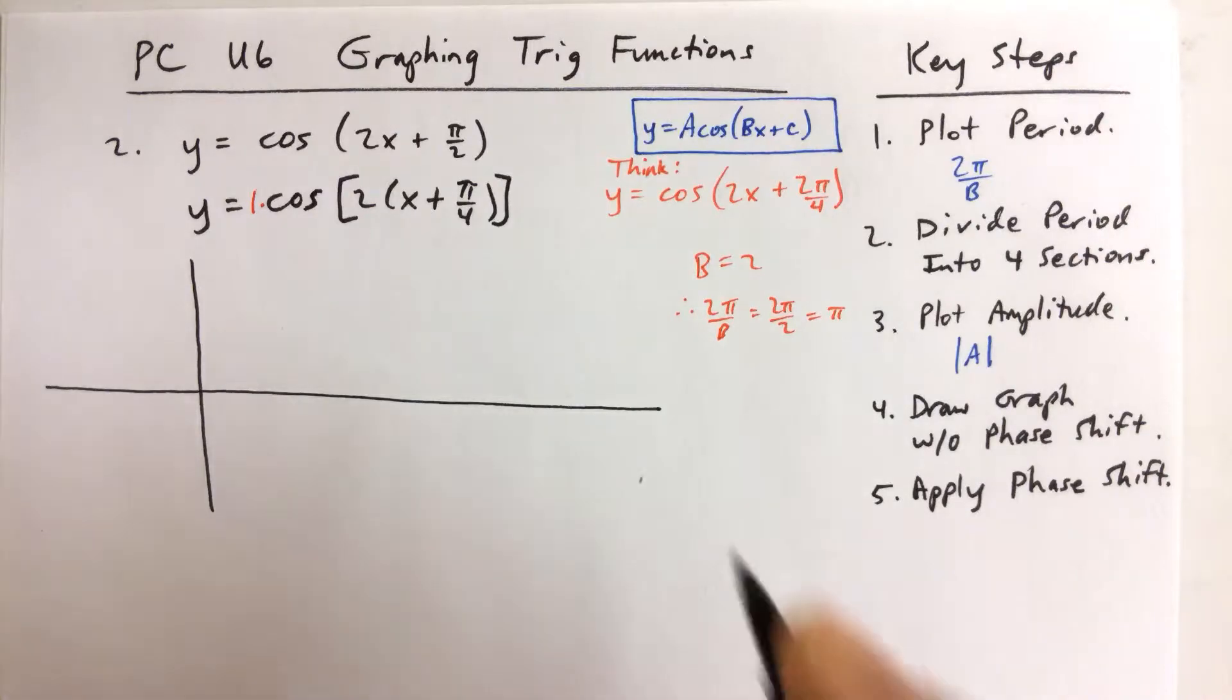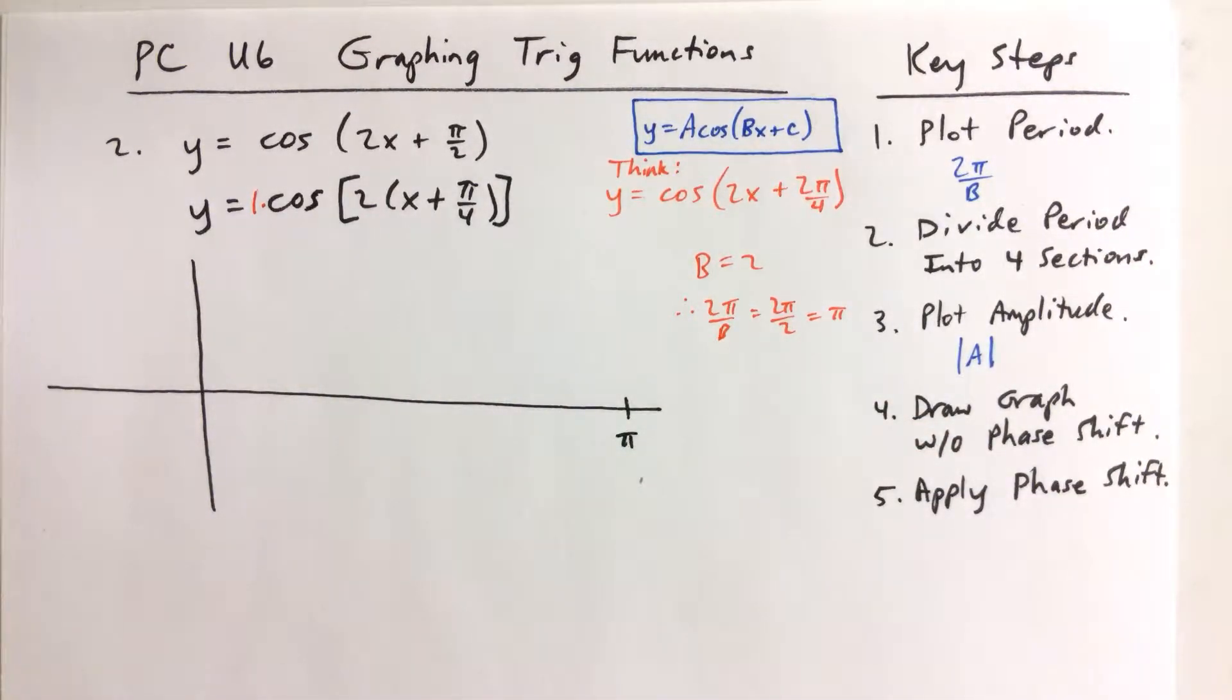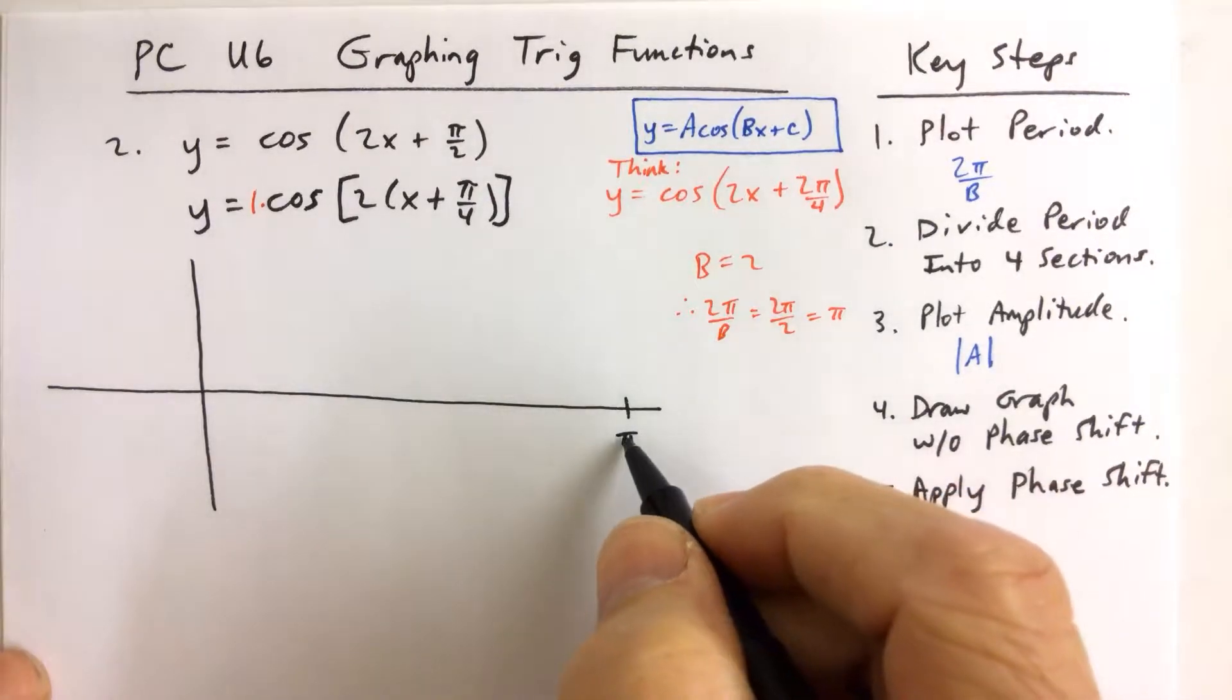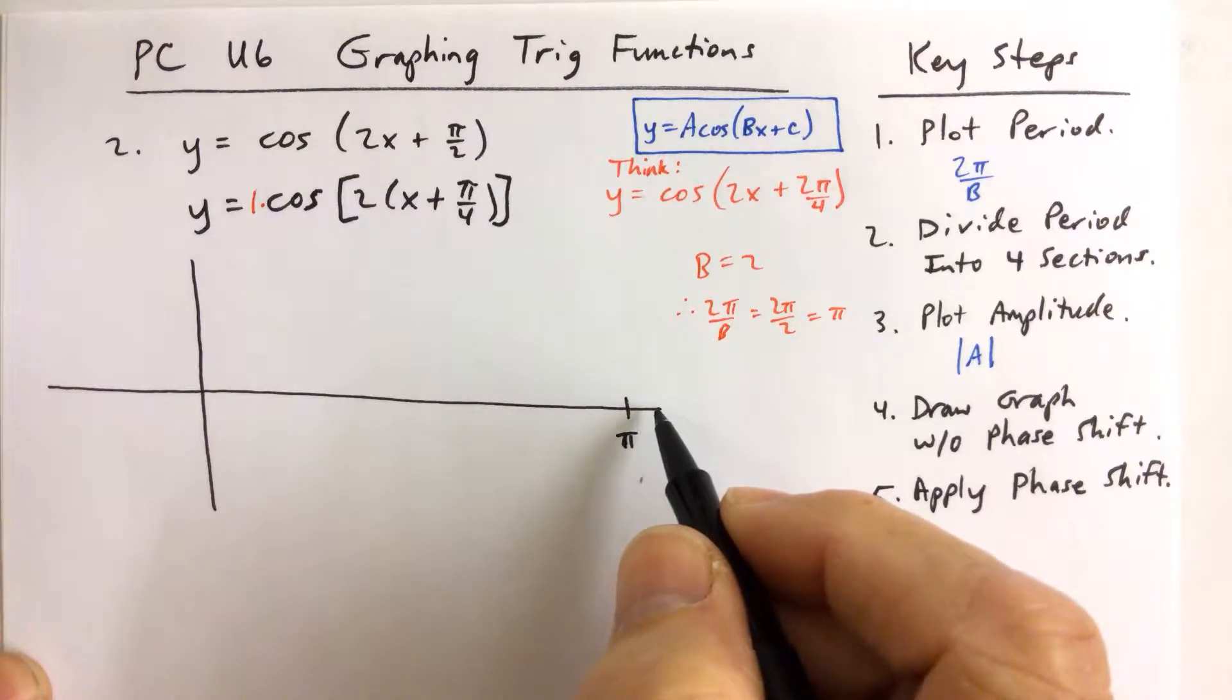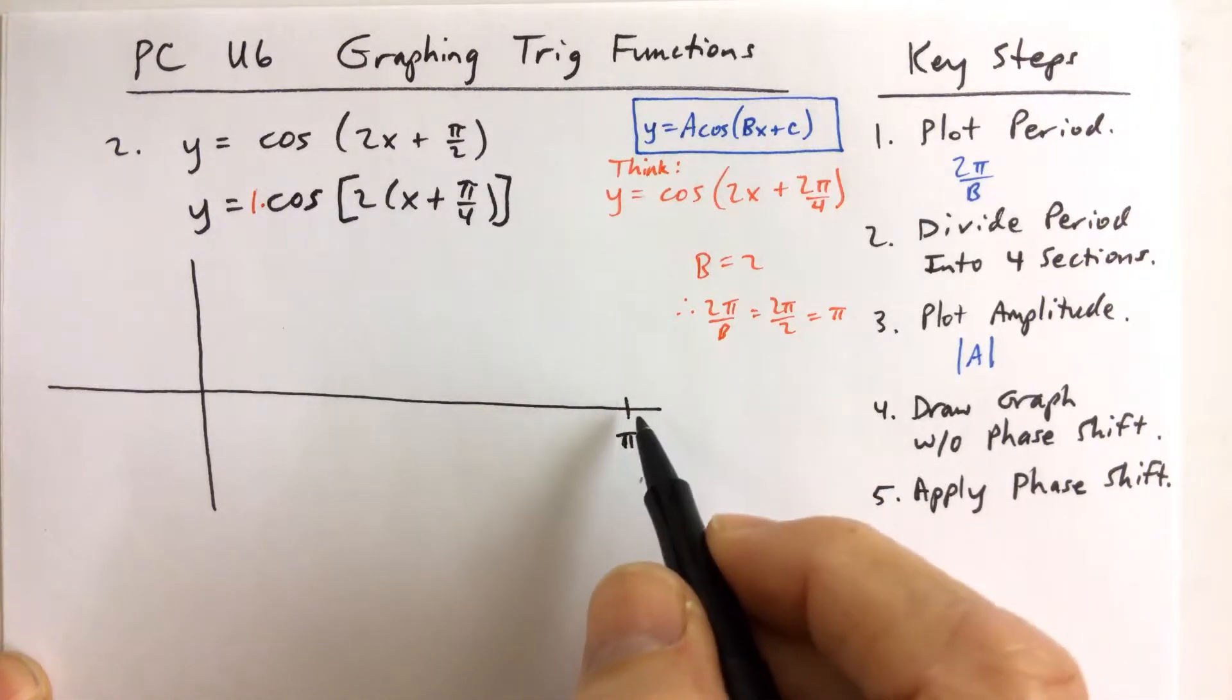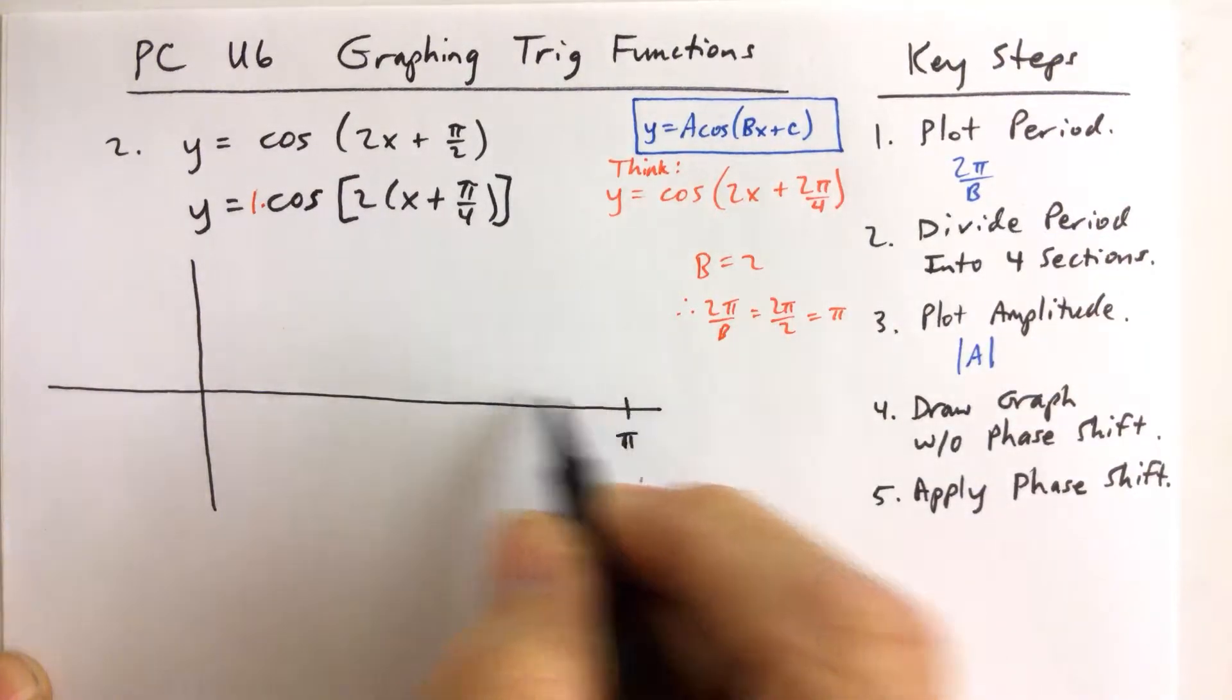So now that I know what the period is, I'm going to go ahead and plot it. You just put a little tick mark towards the end of your graph and towards the end of the x-axis that you drew and call that pi.